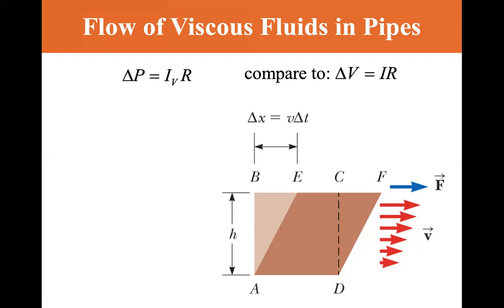And we use IV to compare it to the electronic equivalent or the electricity equivalent of delta voltage is equal to I times R, where I is the flow of current and delta V is the potential, the electric potential that causes the flow of current, and R is the resistance, the resistance to the flow of current.